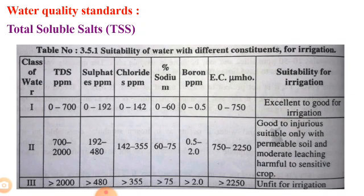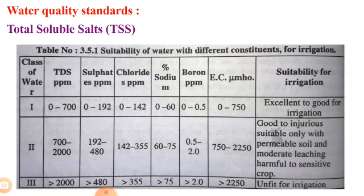If TDS is 700 to 2000 ppm, sulphate is 192 to 480 ppm, chloride is 142 to 355 ppm, sodium is 60 to 75%, boron is 0.5 to 2.0 ppm, and EC is 750 to 2250 millimhos, that type of water is good to injurious — suitable only with permeable soil and moderate leaching, and harmful to sensitive crops.